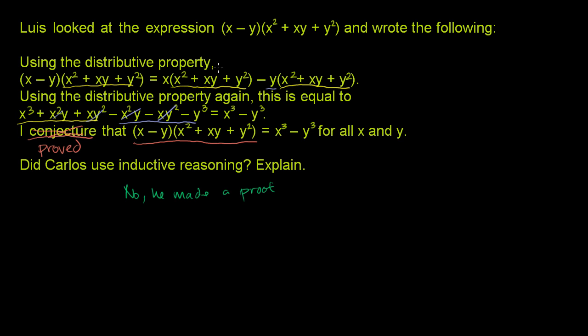Inductive reasoning would have been if you would have given him (5 - 2)(5² + 5×2 + 2²), and you saw that that was equal to the same thing as 5³ - 2³. And then let's say he did it for 1 and 7 in a couple of examples, and it kept holding for all of the examples, that it was the first number cubed minus the second number cubed, then it would have been inductive reasoning to say that that is true for all numbers x and y.